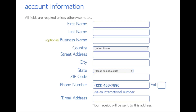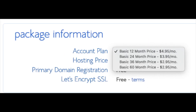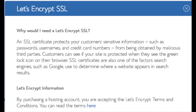You are now brought to a 'Create Your Account' page. This is where you will input your information: first name, last name, business name (optional), country and address information, phone number, and lastly the best email for you, as you'll receive an email receipt of payment and a copy of your login credentials. Below that you will see package information and account plan, where you can select the term for your hosting: 12, 24, 36, or 60 months. You'll save money the longer you purchase hosting. Setup fee, domain registration, and Let's Encrypt SSL are all free. The SSL certificate makes your site secure with HTTPS.